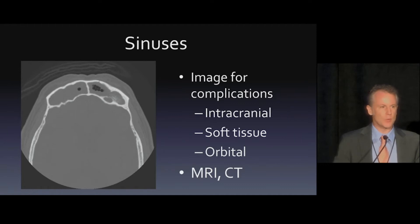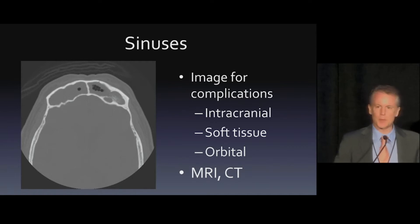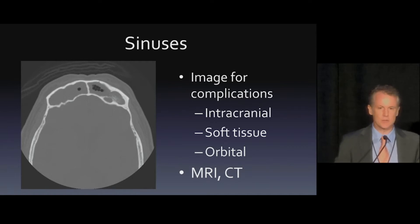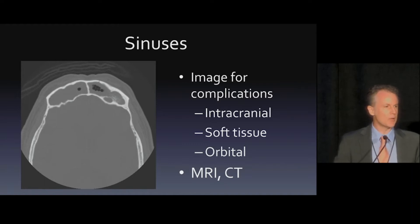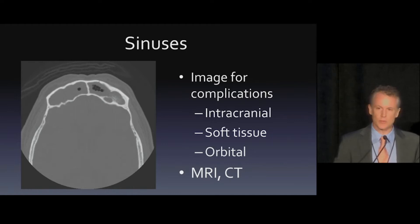So, first of all, what do we look for in sinuses? Dr. Peterson went over a little bit of this earlier, so I'll just touch on it. We normally image for complications in the ED — intracranial complications, soft tissue complications, orbital stuff. MR and CT both play important roles. MR is what we want if something is going badly and we need to look more closely. CT is what we usually have.